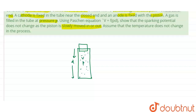At the closed end there is a cathode, and at the movable piston end there is an anode. So cathode is at the closed end and anode is at the movable piston.